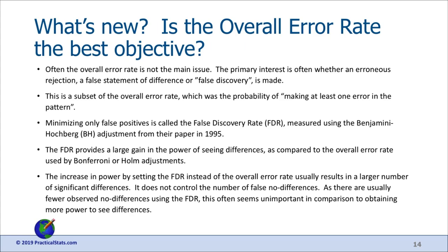The false discovery rate minimizes or sets the false positive rate — one of the two types of errors — rather than both. The benefit is a large gain in power for seeing differences compared to Holm or other modern adjustments. This increased power enables you to see more differences in individual pairwise comparisons. It doesn't control false negatives, but by finding more differences it also minimizes false 'no difference' statements.